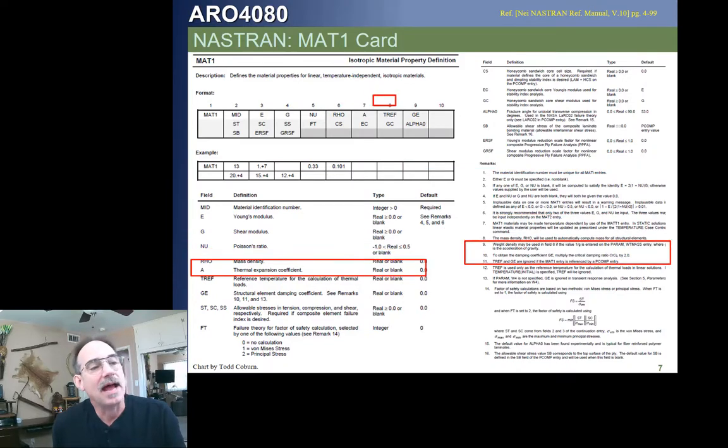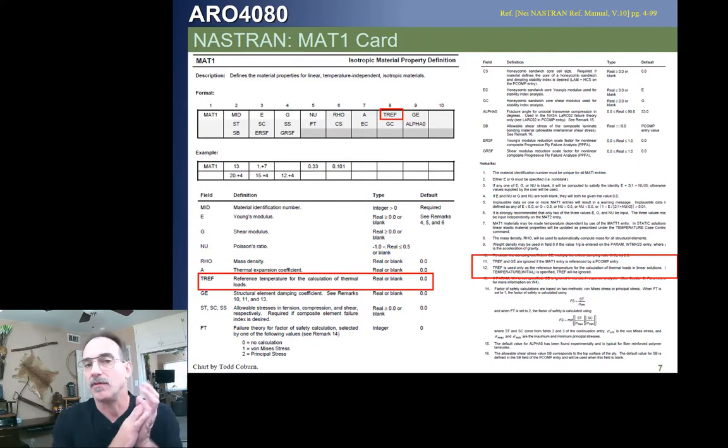All right. Now, going back, remember, we've seen the material card before, but one thing we didn't focus on is the reference temperature. So, each and every element in your model is going to need a material card, right, as well as a property card. And the material card could have used a T reference. It's actually right after the coefficient of thermal expansion. Right after the coefficient of thermal expansion, there's T ref. Now, if you look down here at the second little red box, you'll notice that the default is zero.